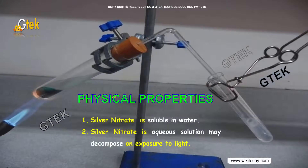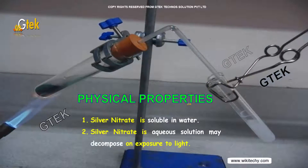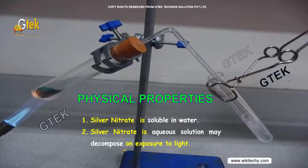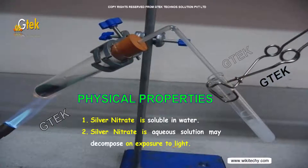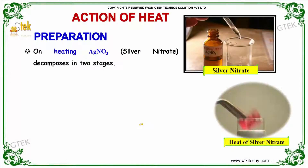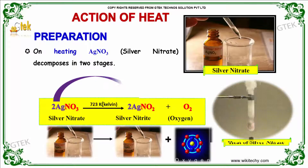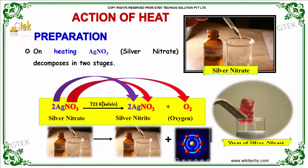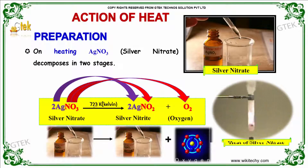If we talk about the physical properties, silver nitrate is soluble in water and its aqueous solution may decompose on exposure to light. On heating silver nitrate, it decomposes in two stages. At 723 Kelvin, silver nitrate gives silver nitrite and oxygen.